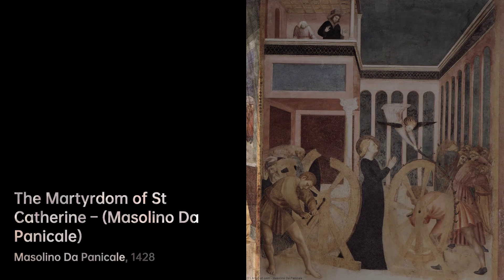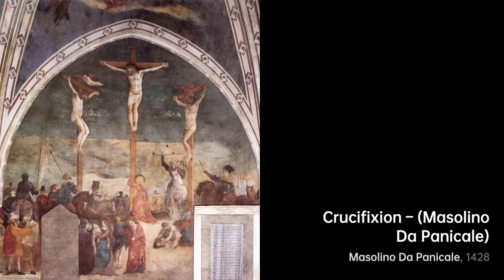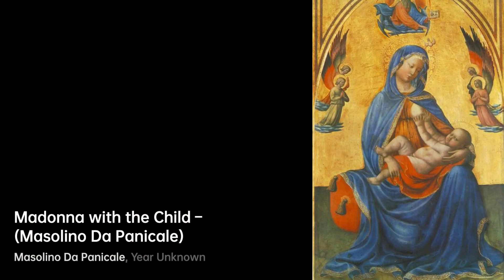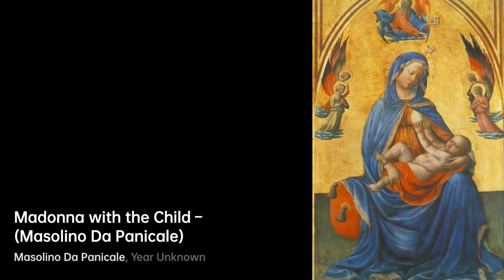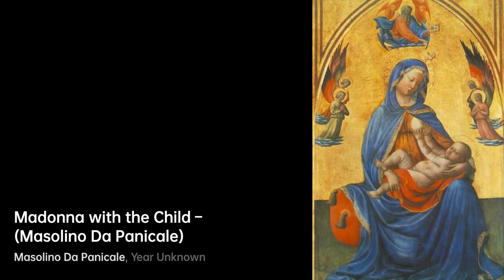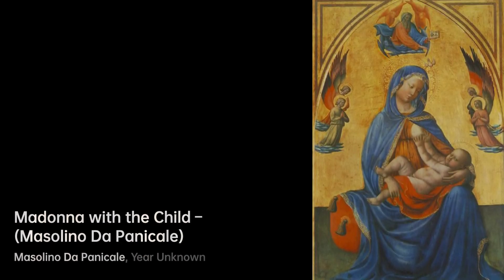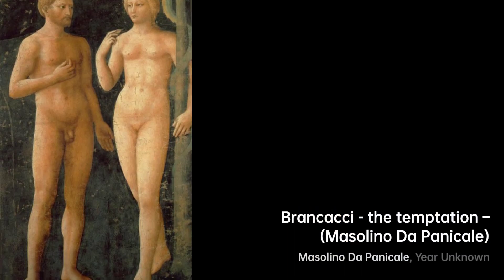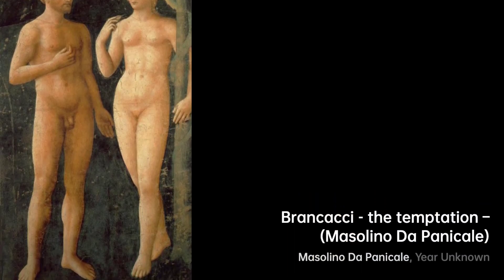Masolino also painted a cycle of 300 historical figures in the Orsini Palace in Rome in the early 1430s, and worked in Todi. His painting The Martyrdom of Saint Catherine is another notable work of his.